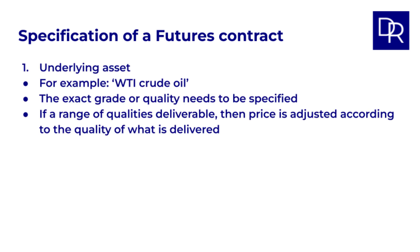There are several key specifications that are standardized for each futures contract. First, there's the underlying asset — this is what the futures contract is based on. In our oil example, it's crude oil, specifically West Texas Intermediate, or WTI. But simply saying 'crude oil' isn't always enough. Exchanges often need to define the exact grade or quality that can be delivered, especially for commodities where quality can vary — think agricultural products or different types of metals. The exchange will specify acceptable quality levels. For some futures, a range of qualities might be deliverable, but the price is adjusted accordingly.